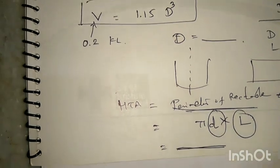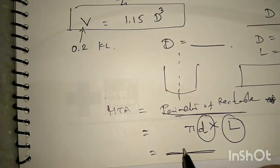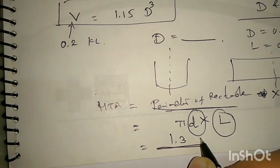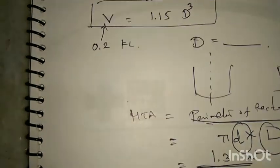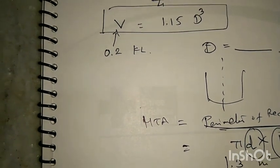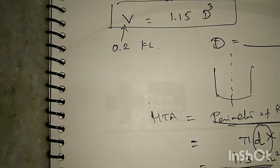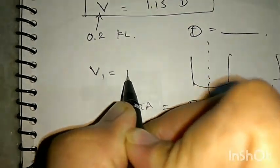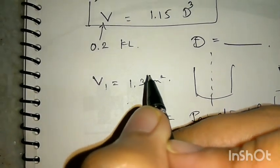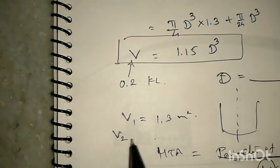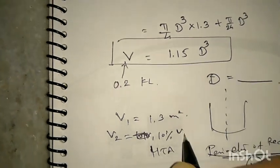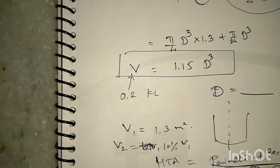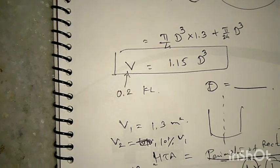Let's assume the cylindrical part area V1 = 1.3 m². For the torispherical part, here is a simple thumb rule: take 10% of V1. So 10% of 1.3 m² gives 0.13 m². Adding these together, we easily get a total heat transfer area of 1.43 m².